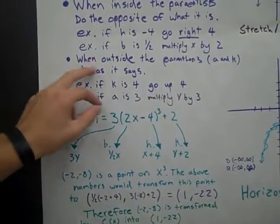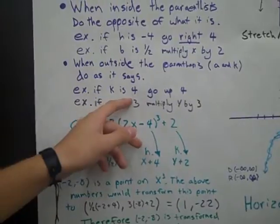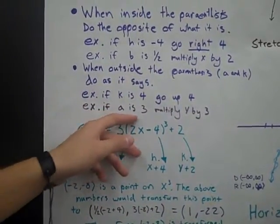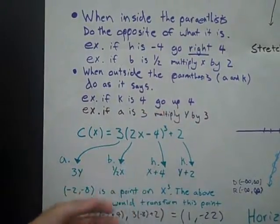When you're outside the parentheses, you do as it says. If k is 4, then you would go up 4 like you would think you would do. And if a is 3, you multiply the y by 3.